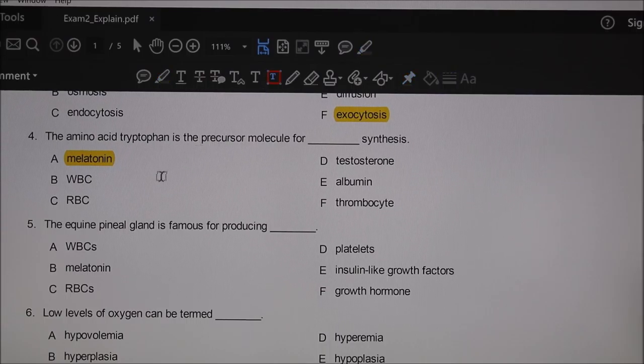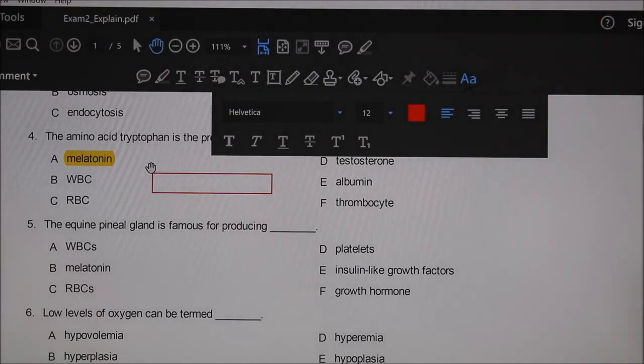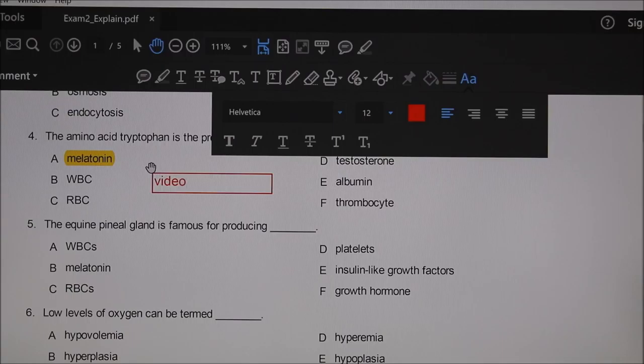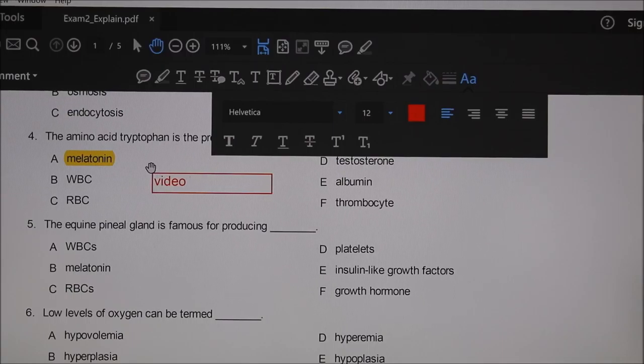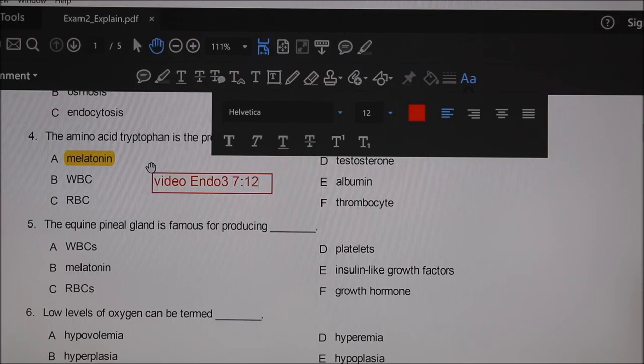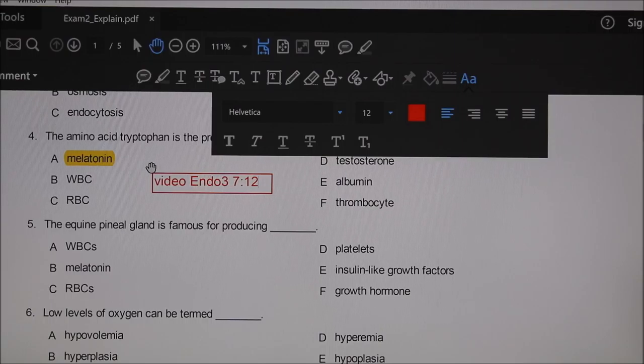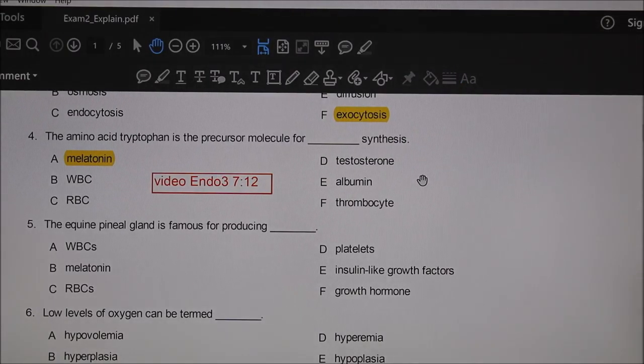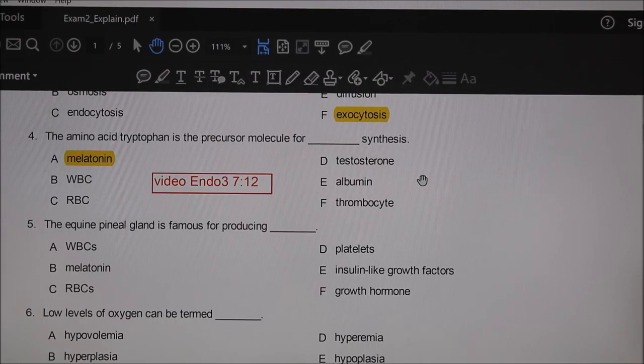The amino acid tryptophan is the precursor molecule for blank synthesis. It ends up being melatonin is the correct answer.